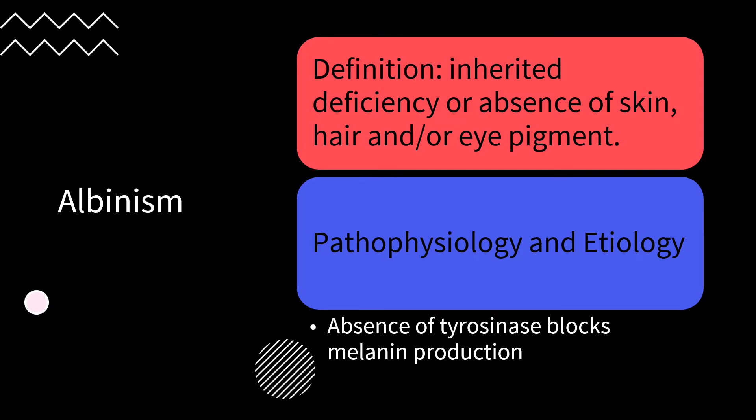Albinism is an inherited deficiency or absence of skin, hair, or eye pigment, and may be limited to just the eyes. The most common types are congenital leukoderma and leukopathia. The absence of the enzyme tyrosinase blocks the production of melanin causing albinism. It may also be an inherited autosomal recessive trait in which tyrosine levels are normal and only the eyes are affected.